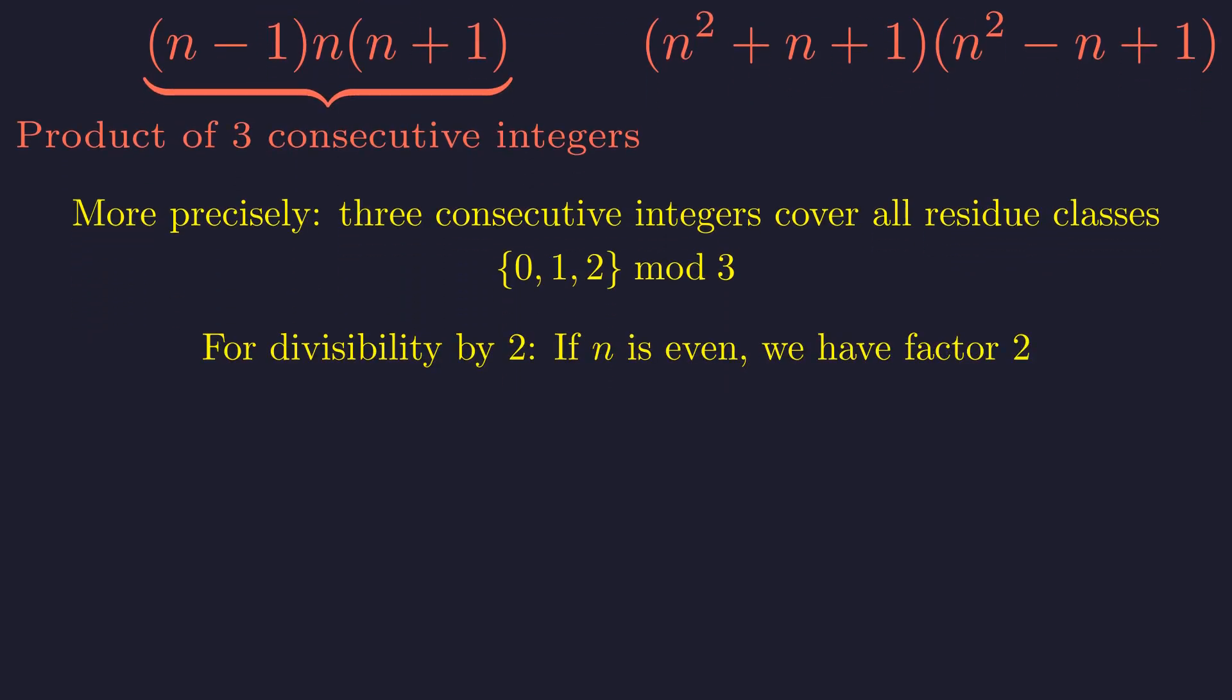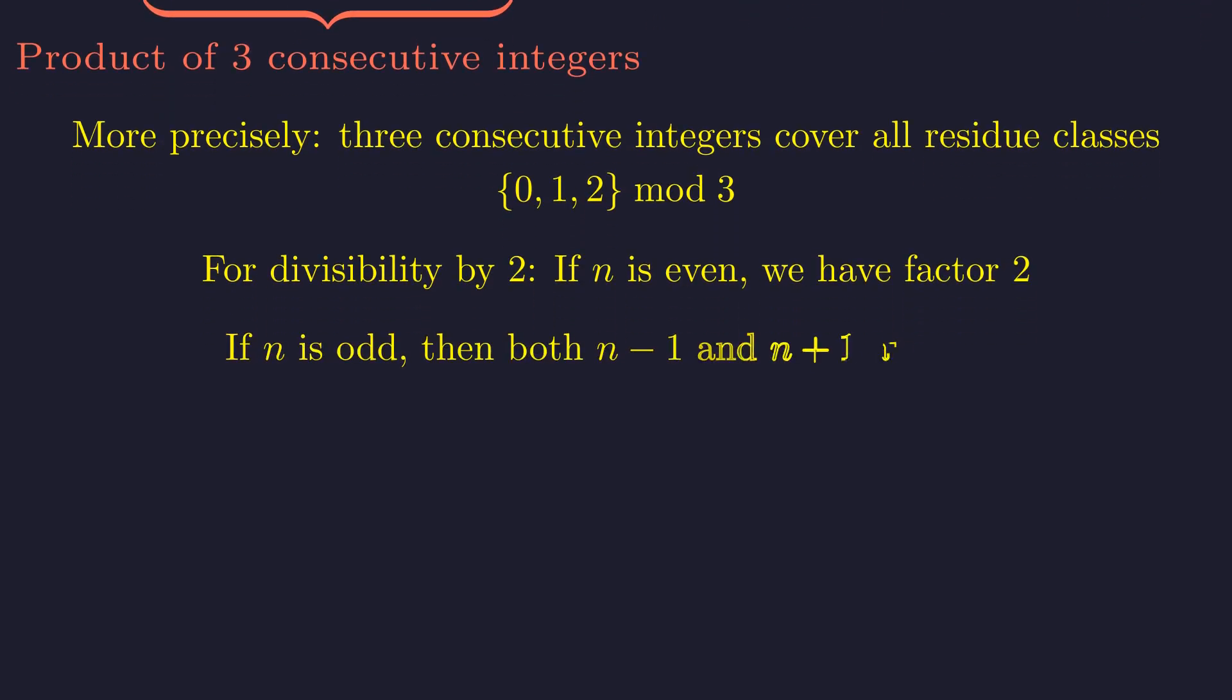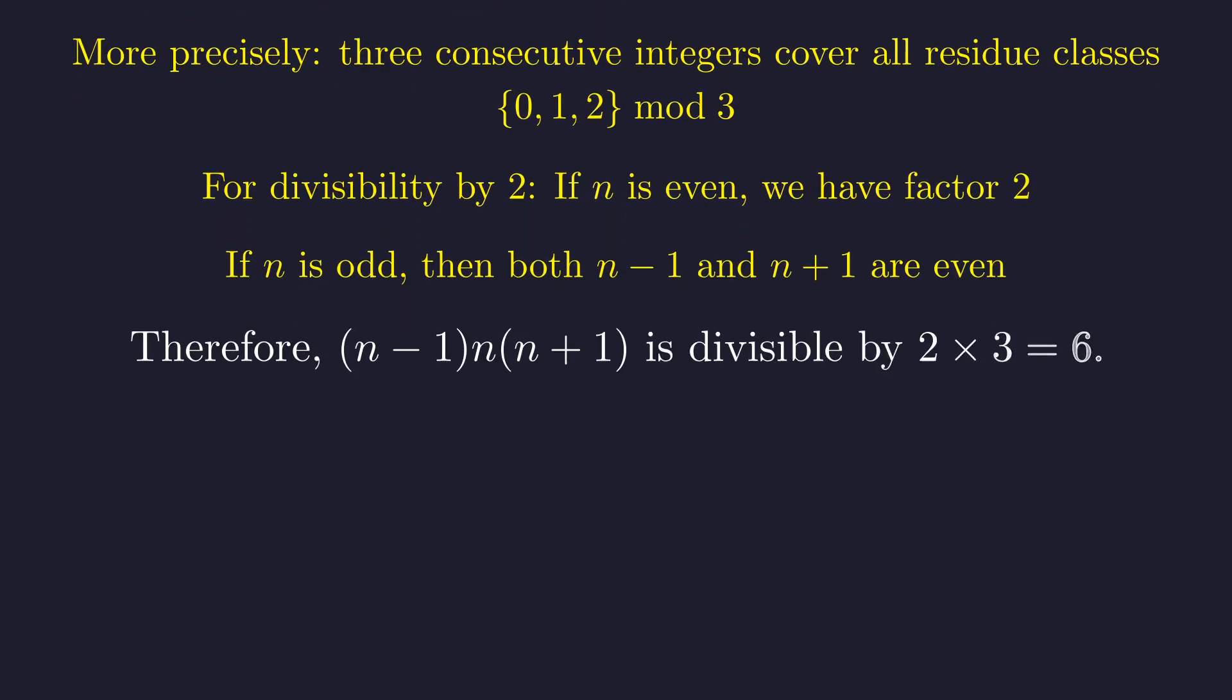For divisibility by 2, let's think about this carefully. If n is even, we're done. We already have our factor of 2. If n is odd, then both n - 1 and n + 1 are even. Actually, since they're 2 apart, we get at least a factor of 4. But we only need a factor of 2, so we're golden. So this product of three consecutive integers is always divisible by both 2 and 3, which means it's divisible by 6. One piece of our puzzle is complete.